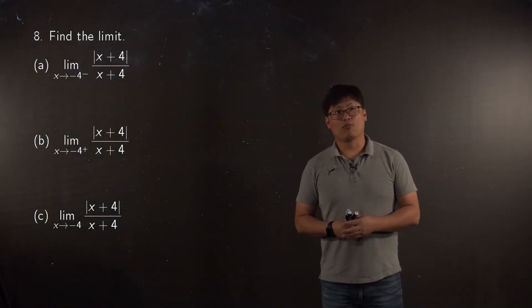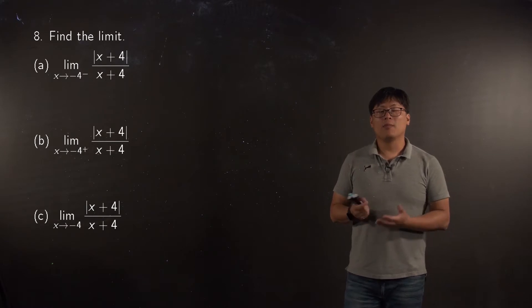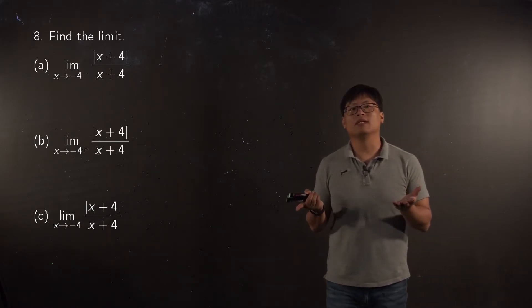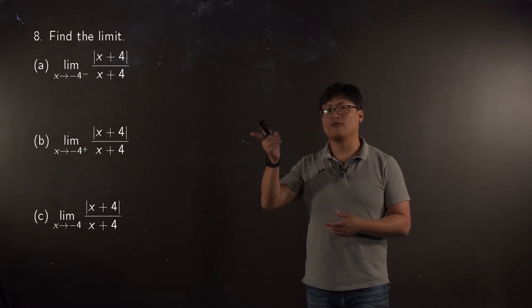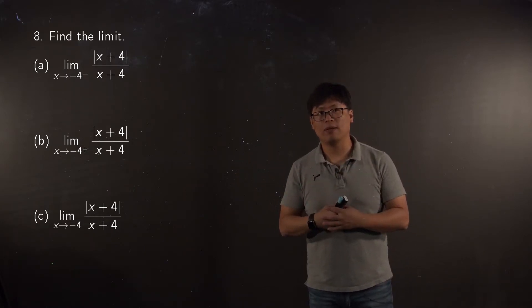Here we go. So another problem, another different problem. But basically to evaluate this limit, we're going to plug in negative 4, then you can easily find it is 0 over 0 form, which is indeterminate form.